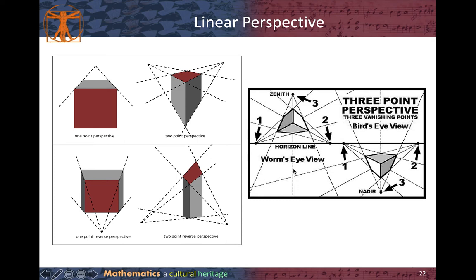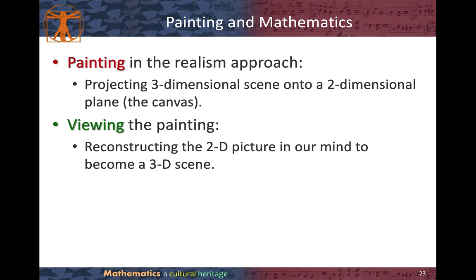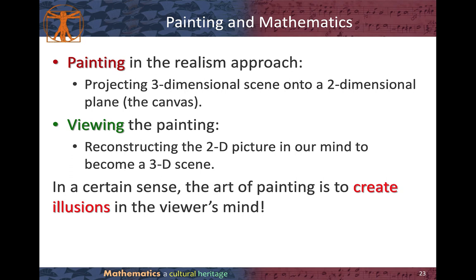The left view is the worm's eye view and the right one is the bird's eye view. Regarding the relationship between painting and mathematics: if we want to paint in a realism approach — making the painting look very real — we project a three-dimensional scene onto a two-dimensional plane. Conversely, when we view the painting, the two-dimensional picture is reconstructed in our mind as a three-dimensional scene. In a certain sense, the art of painting is to create illusions in the viewer's mind.